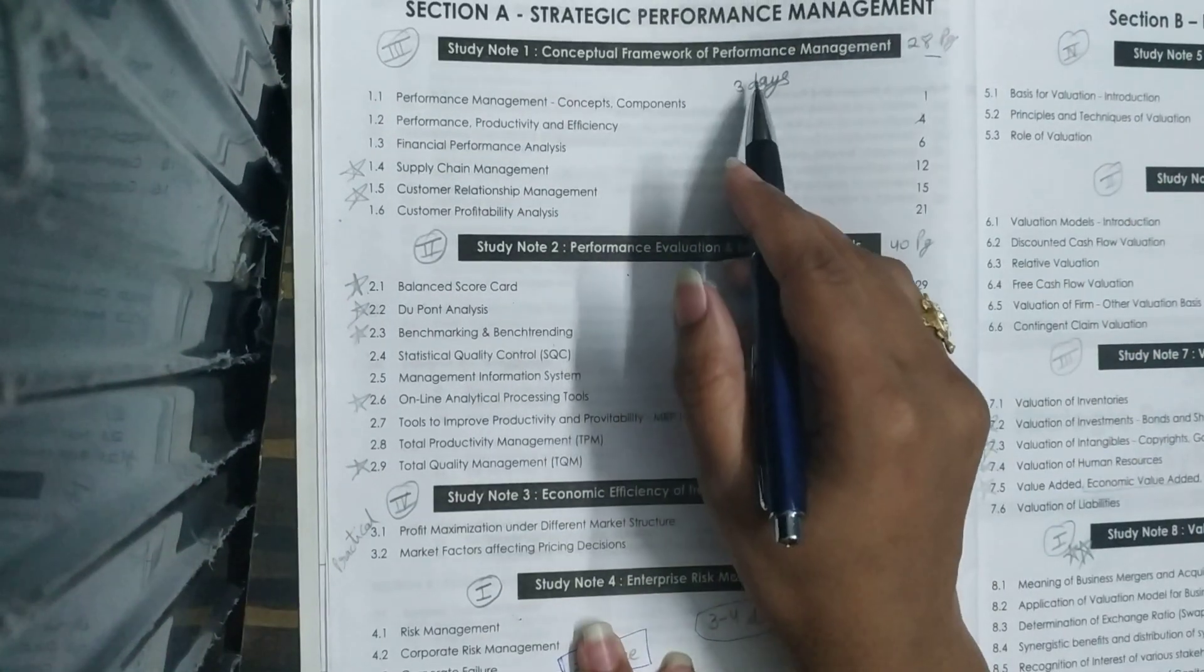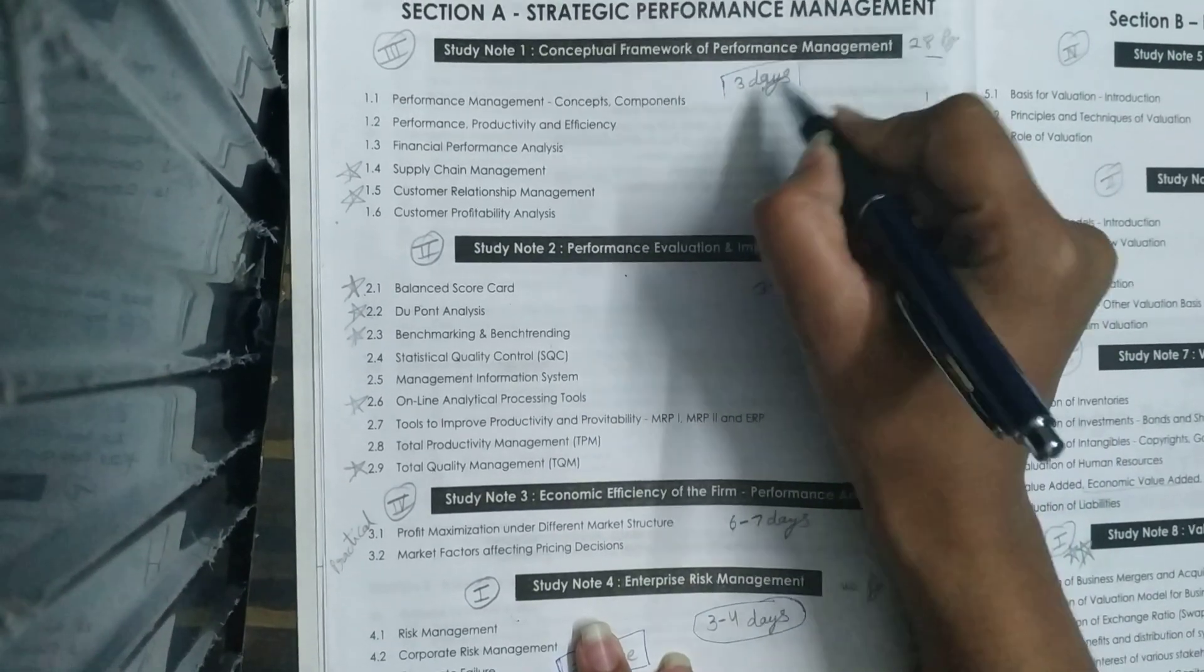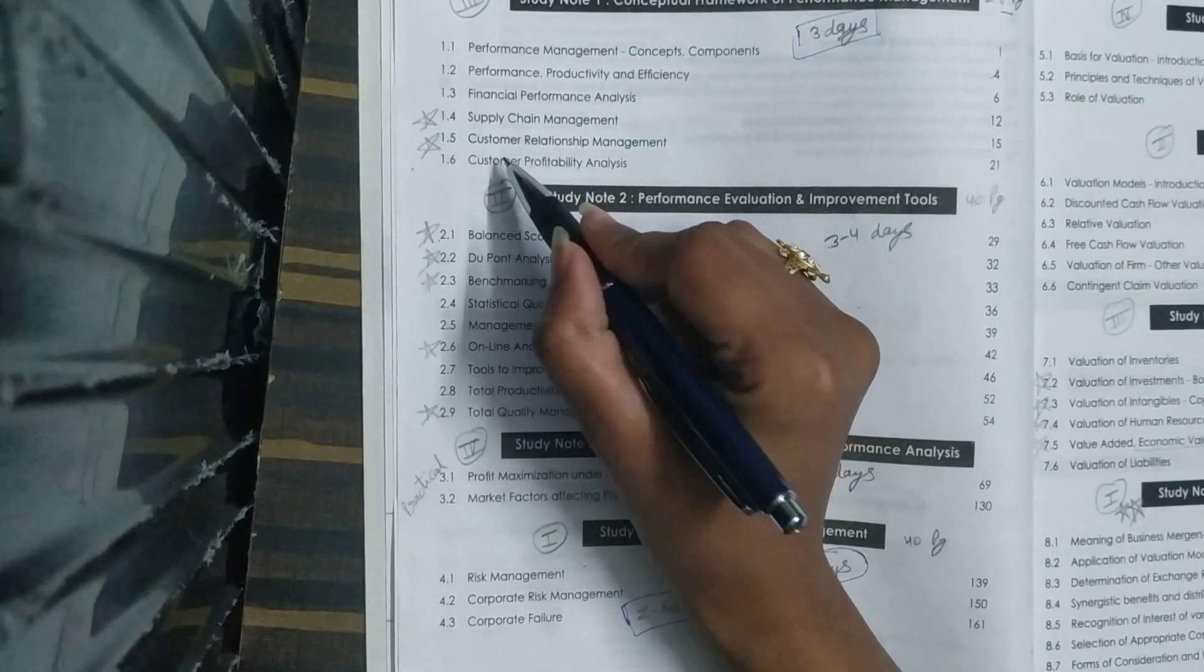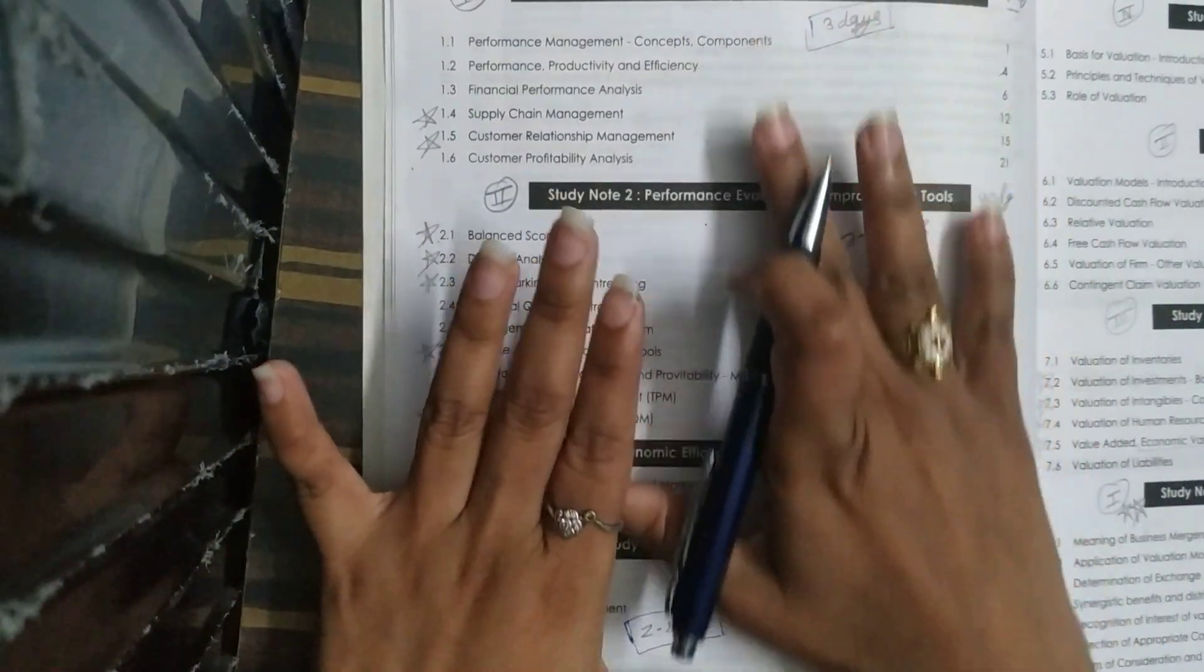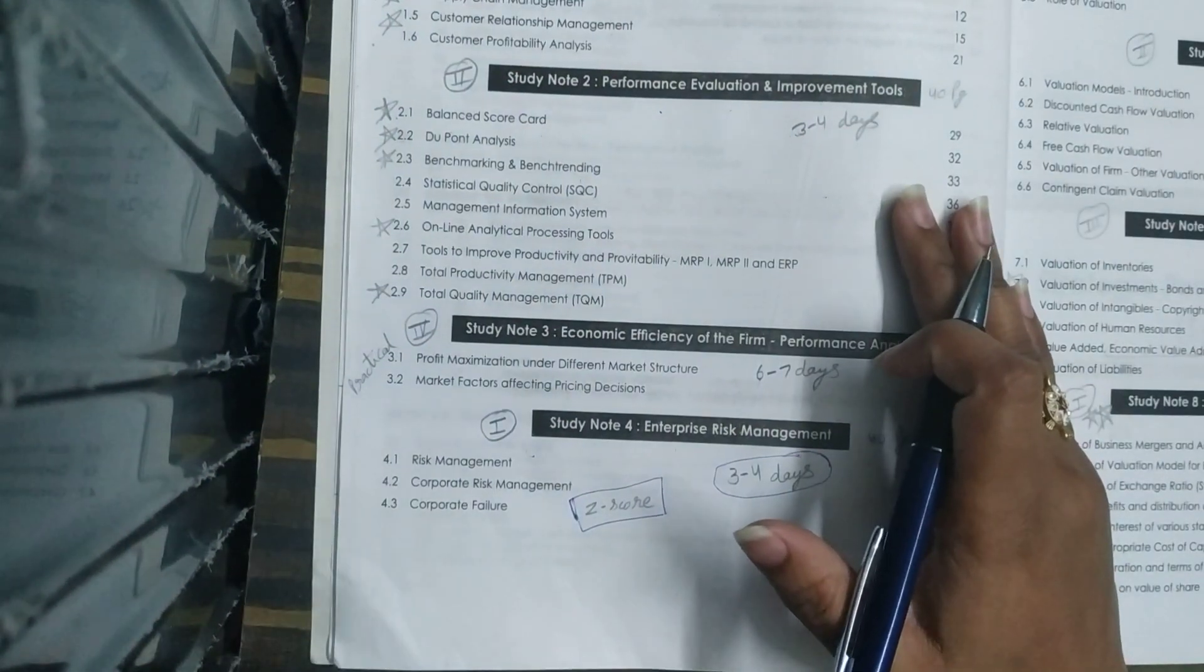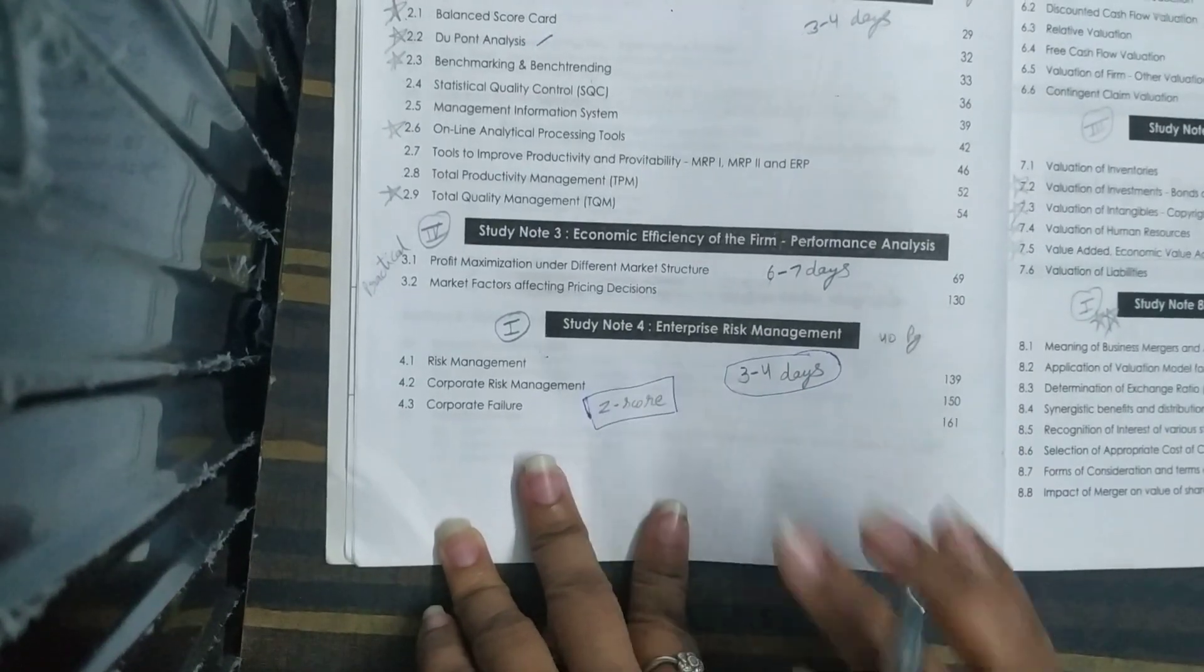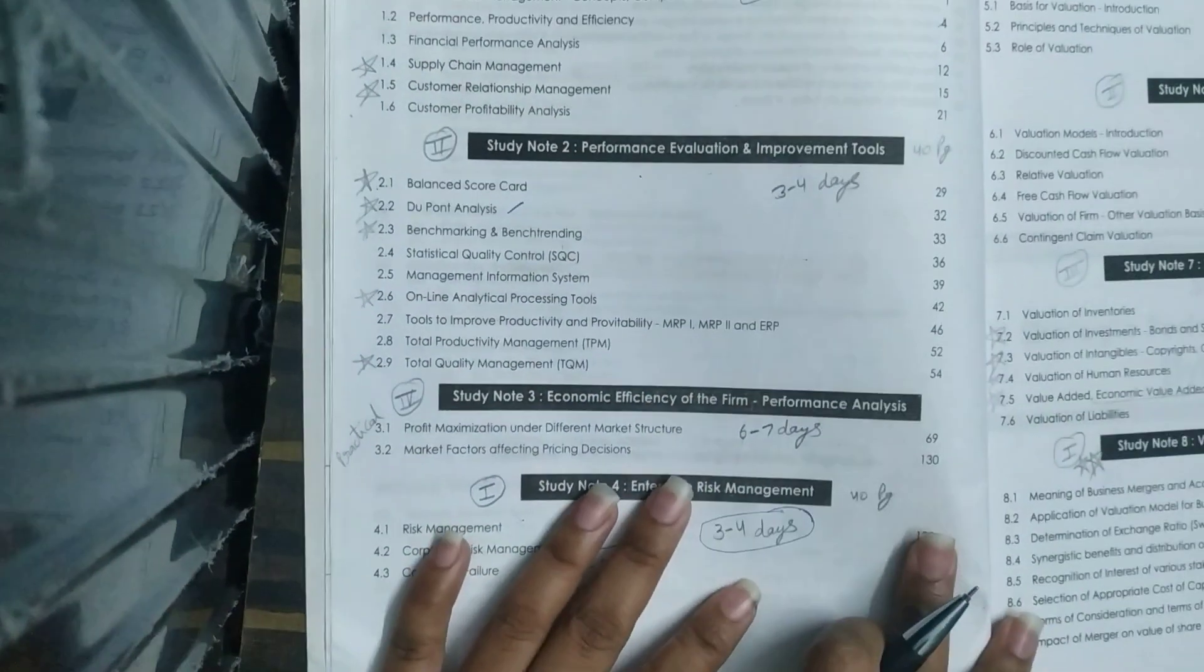Third is Conceptual Framework of Performance Management. This is 28 pages which you can cover easily in 3 days. The main concepts from which questions come are Supply Chain Management and Customer Relationship Management, which are often asked as theory questions. SPM is mainly theory portion, but there are some practical questions that come out, like DuPont Analysis and Z-score, which are practical questions.